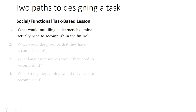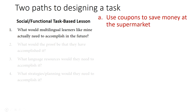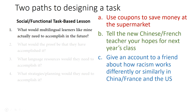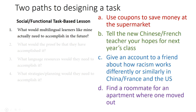Let me give some examples of what these could look like in real life. What would multilingual learners actually need to accomplish in the future? Maybe something like: use coupons to save money at the supermarket; tell the Chinese or French teacher their hopes for next year's class; write a letter to the future teacher; give an account to a friend about how racism works differently in China and France versus the US; or find a roommate for an apartment.